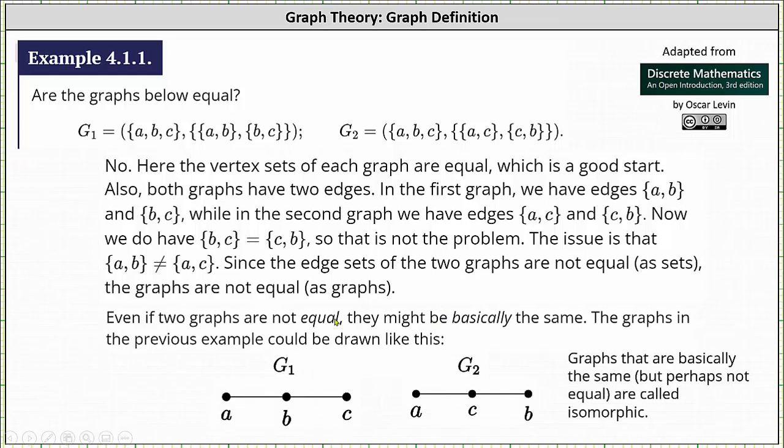Even if the two graphs are not equal, they might basically be the same. The graphs in the example above can be drawn as shown below. On the left, we have the graph of G1. On the right, we have the graph of G2. Graphs that are basically the same but perhaps not equal are called isomorphic, which we'll discuss more in the next lesson.